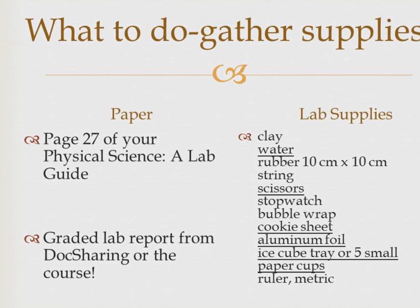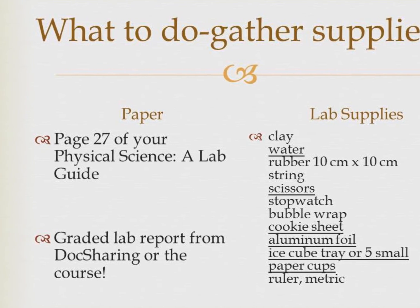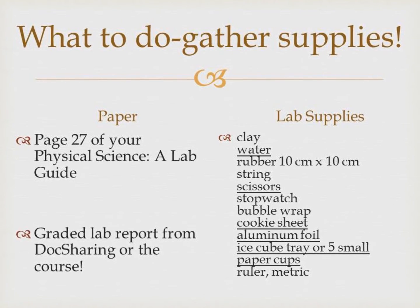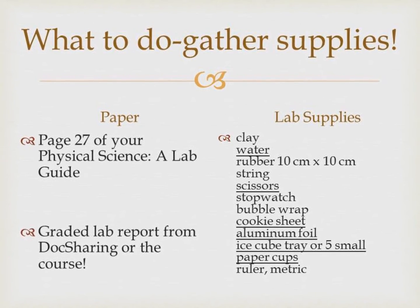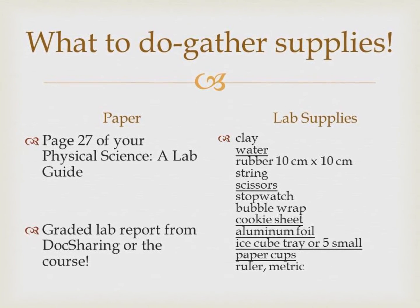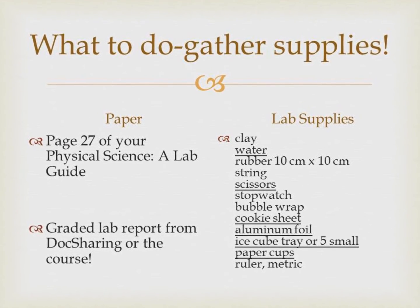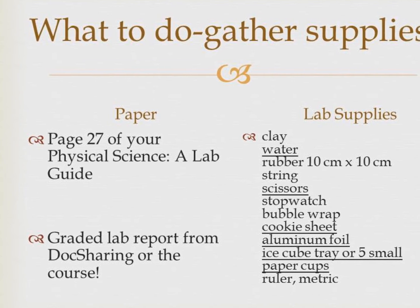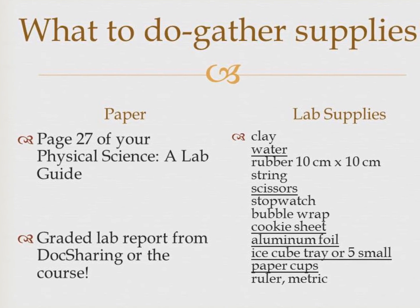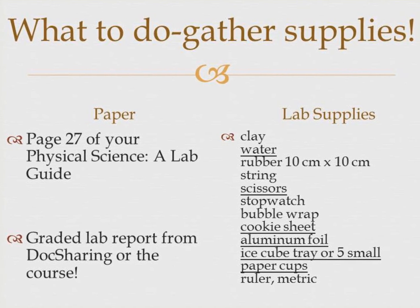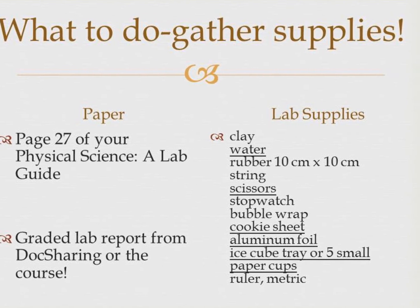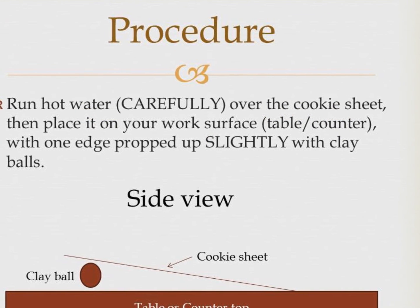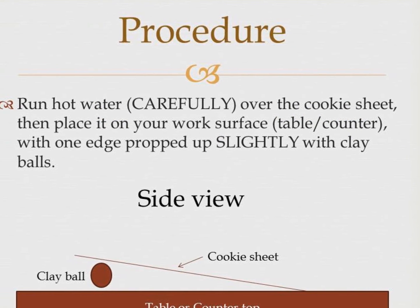What to do? You need page 27 of your physical science lab guide and the graded lab report, either from Doc Sharing or on the left-hand navigation of the course. You also are going to need to gather your lab supplies. I have them listed here on the right — you can pause the video and get those there.